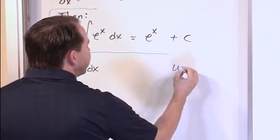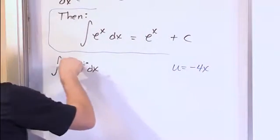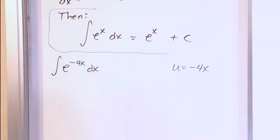And so the obvious substitution here would be to make u equal to negative 4x. So that when I stick it in here, it'll just be e to the u.